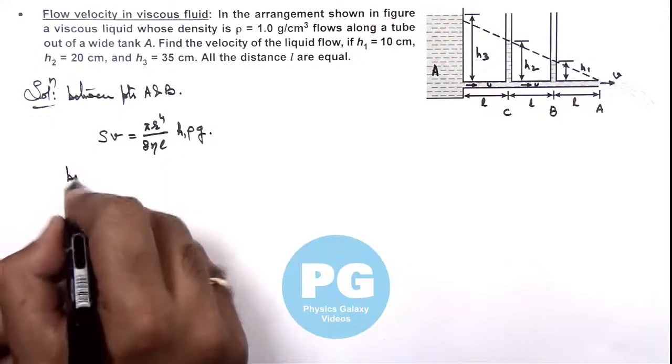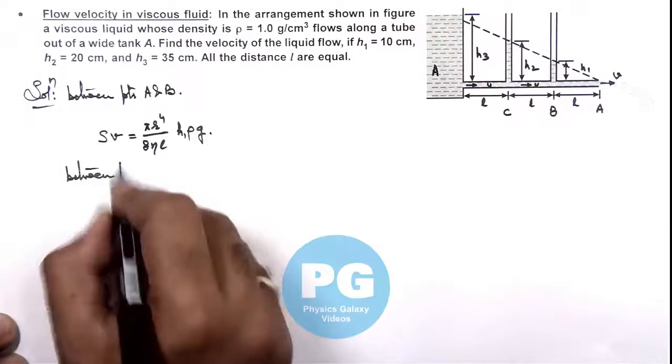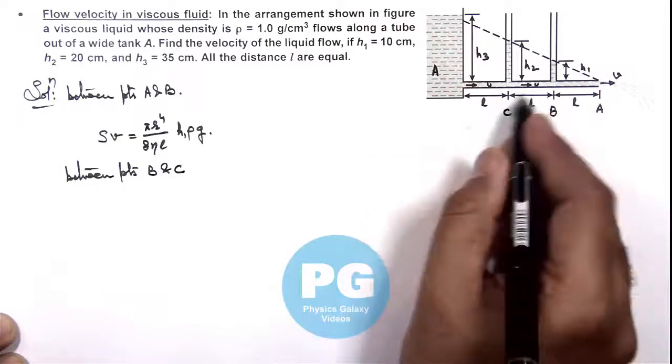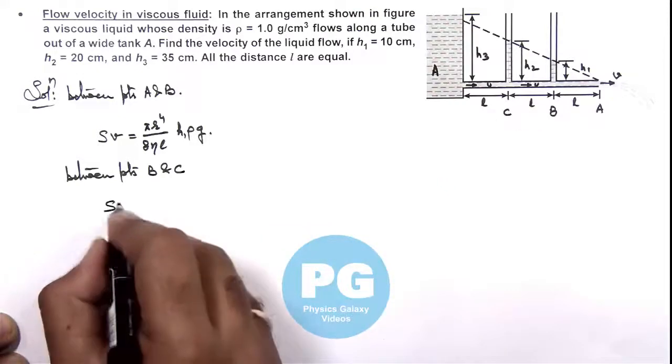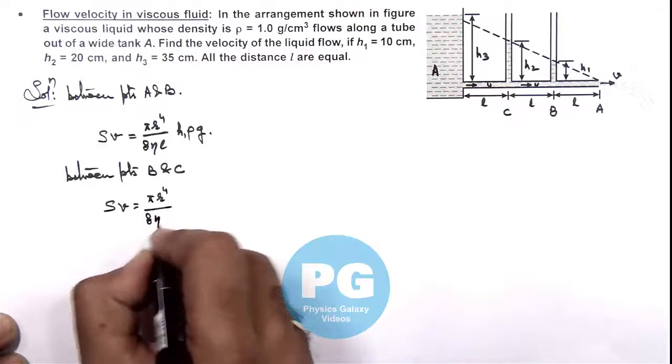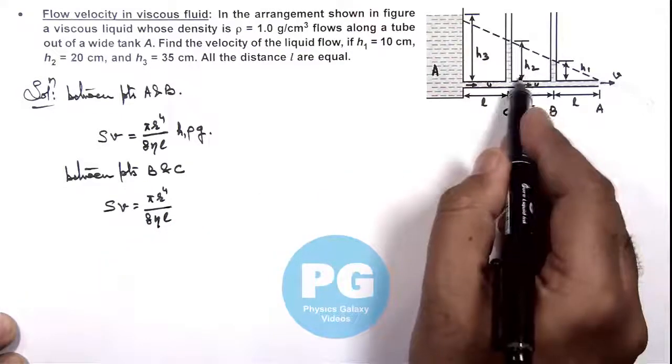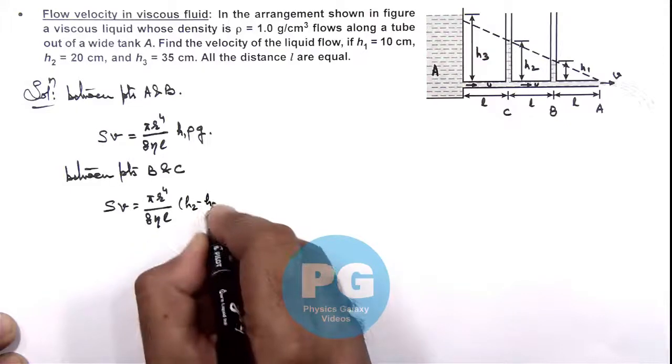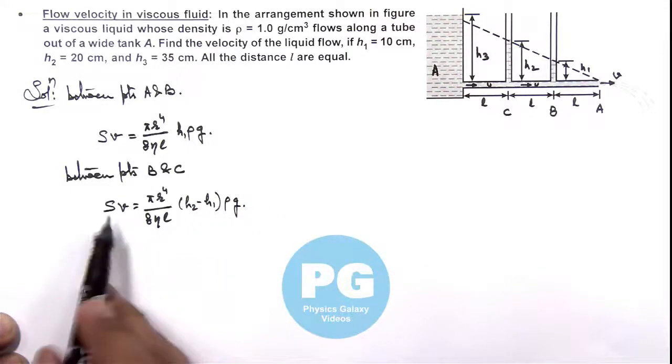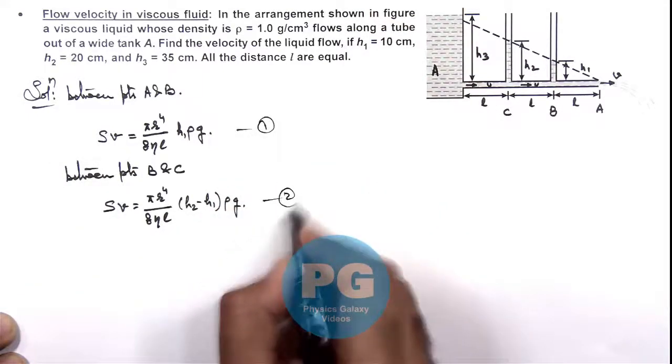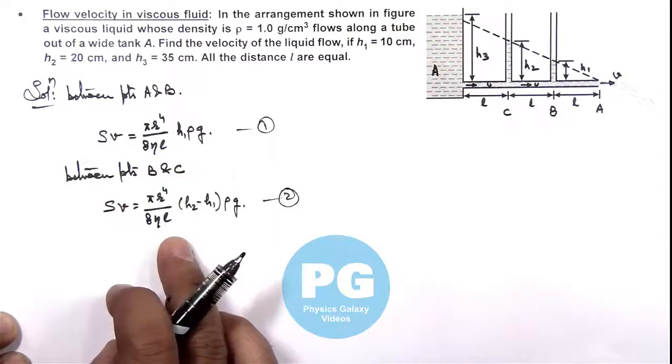And if we talk about between points B and C, then also Sv should be equal to πr⁴/(8ηl). Pressure difference between two points is (h2 - h1) multiplied by ρg. And here as the two left hand side terms in equation 1 and 2 are same, that means right hand side must also be same.